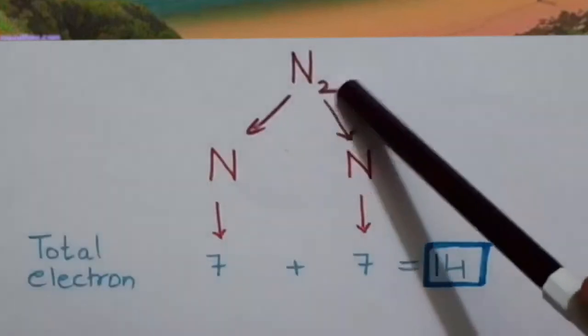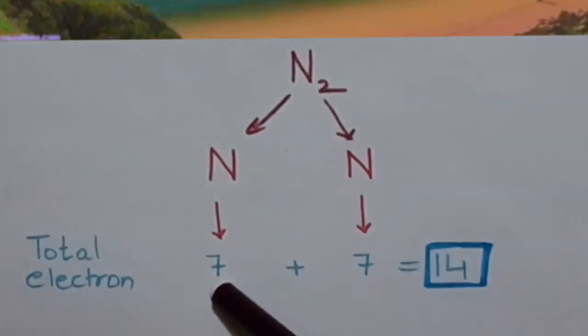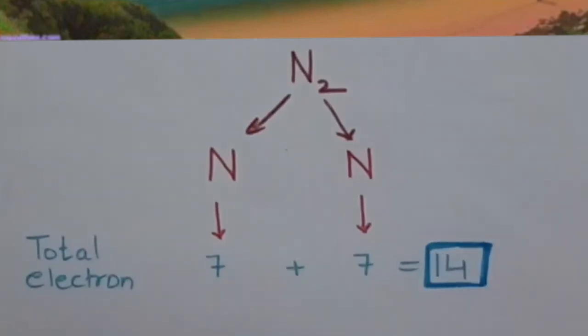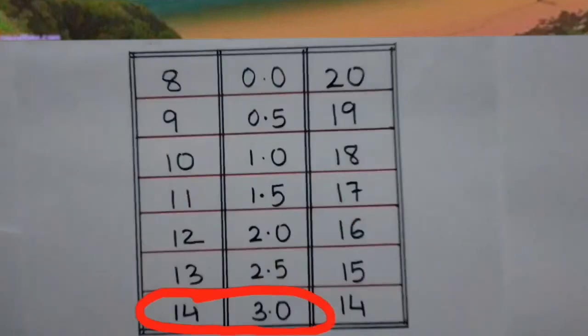For the nitrogen molecule, each nitrogen atom contributes 7 electrons. So, total we have 14 electrons. From the table, we get bond order for nitrogen as 3.